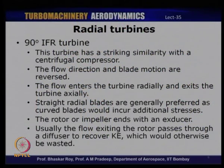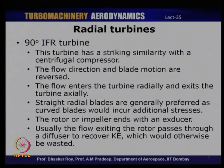A 90-degree IFR turbine in cross-section looks exactly similar to a centrifugal compressor. An IFR 90-degree radial flow turbine has a very striking similarity to a centrifugal compressor — just with flow directions and blade rotation reversed. In a centrifugal compressor, flow enters the impeller axially and leaves radially, whereas in an IFR turbine, flow enters radially and exits axially. Normally, the blades are straight radial, whereas in a centrifugal compressor it is possible to have backward leaning blades.